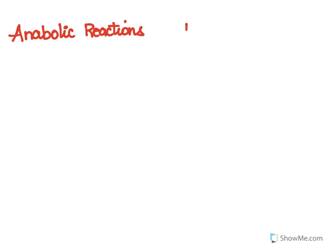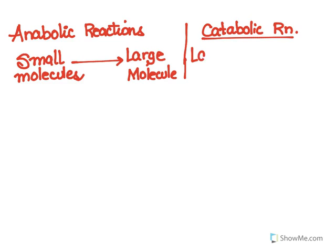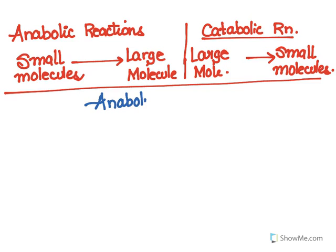In anabolic reactions, basically what happens is you have smaller molecules and after the process is completed we end up with a large molecule. On the other hand, in a catabolic reaction what happens is we have a larger molecule and we end up with smaller molecules. We are going to take a deeper look at anabolic reactions with more examples.